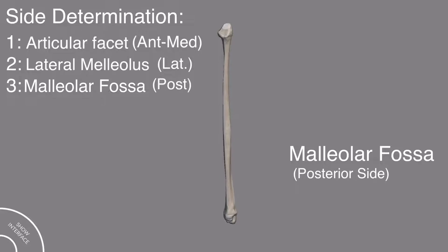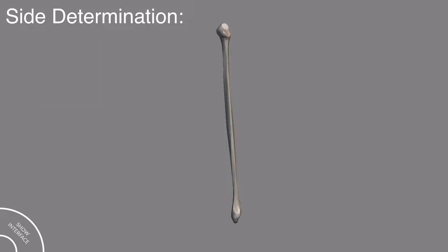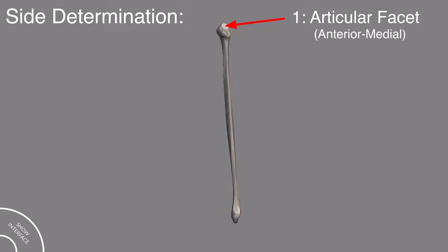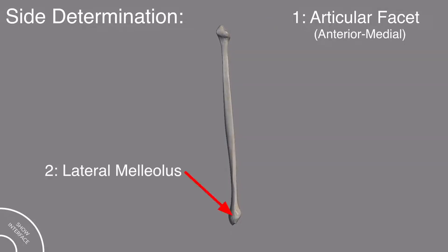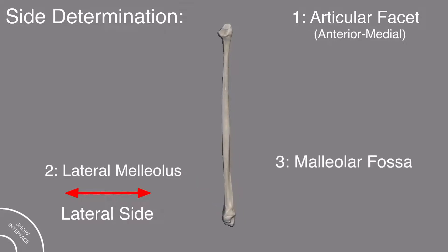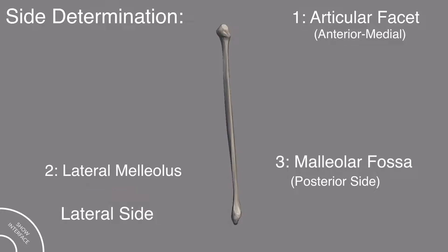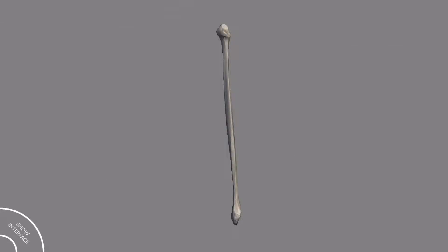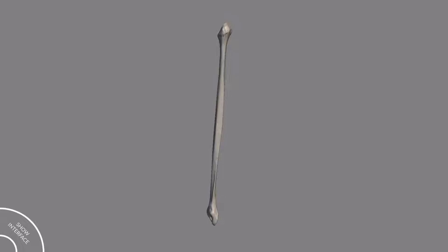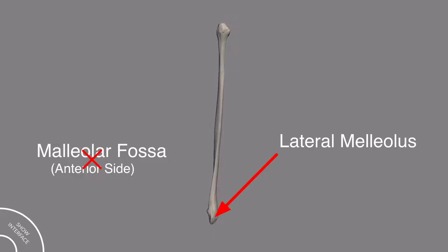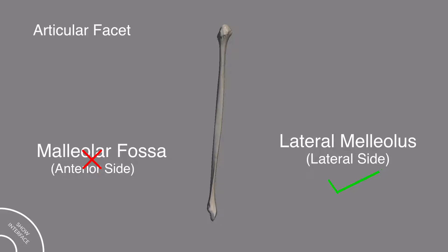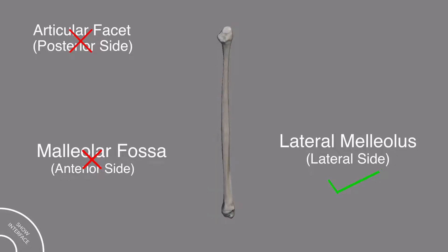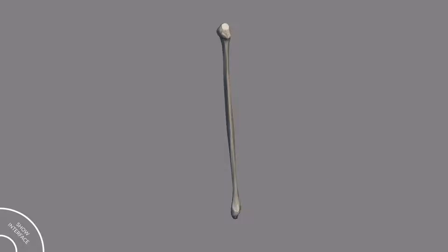The malleolar fossa should be on the posterior side. So with the articular facet in the proximal end in the anteromedial position, the lateral malleolus on the lateral side, and the malleolar fossa on the posterior side — this is the right fibula bone. If you were to consider this incorrectly as the left one, the malleolar fossa would be on the anterior side, and the articular facet for the tibia would come on the posterior side — confirming it is the right fibula bone.